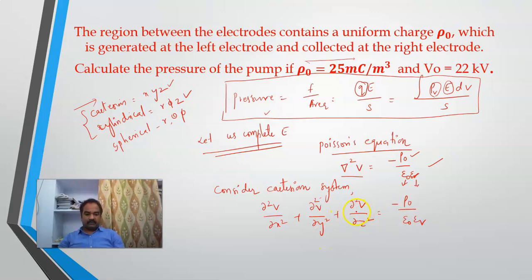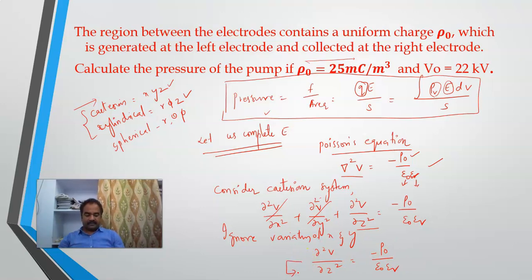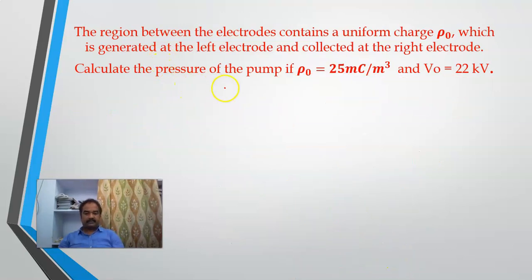Since I do not know whether V varies in the x or y directions, I will ignore those components and consider only the z variation. My equation becomes d squared V over d z squared equals minus rho naught over epsilon. I will now double integrate this equation.